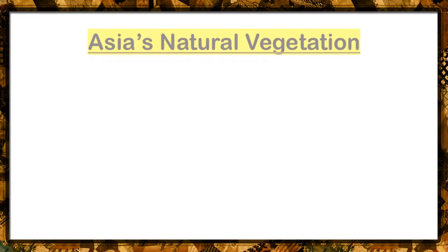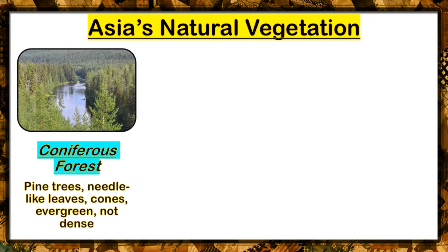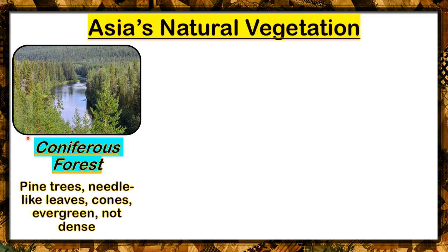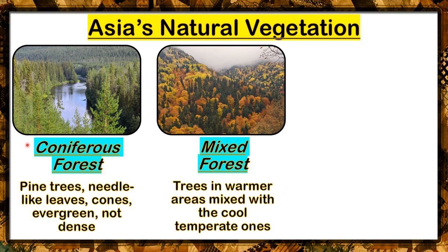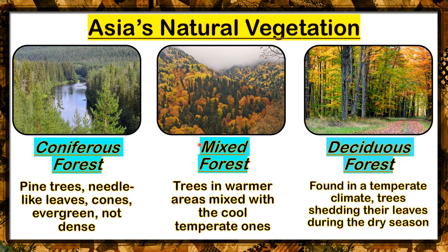Coniferous forest — pine trees, needle-like leaves, cones, evergreen, and not dense. You can see here how a coniferous forest looks like. Next, mixed forest — trees in warmer areas mixed with the cool temperate ones. This is how a mixed forest looks like.